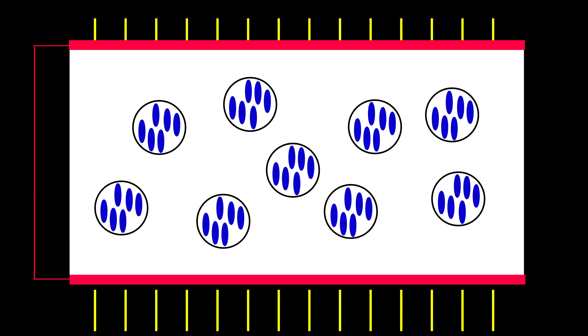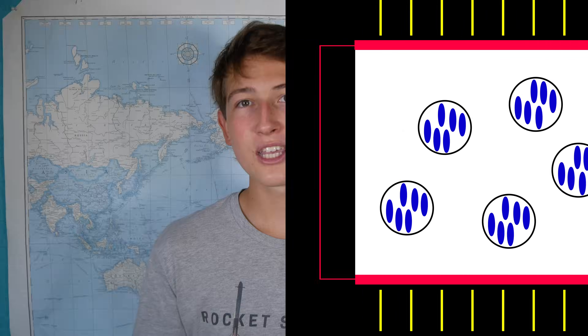However, when a current is run through it, all the liquid crystals align in the same direction, and this allows light to pass through unscattered. And these liquid crystals are really special in doing this.